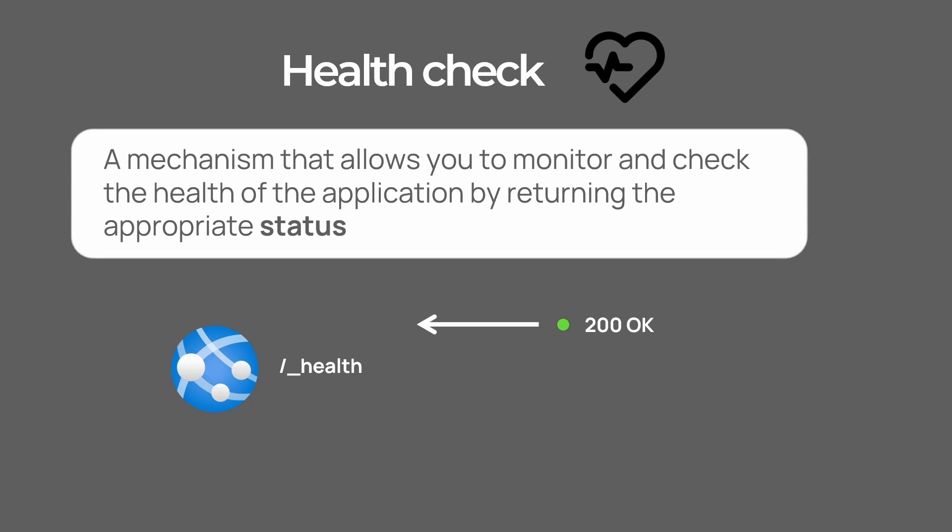A 200 OK response would mean that our application has correctly verified all of its dependencies — for example, it is able to connect to the database and to some external services, and it is basically up and running correctly. You can perform these kinds of checks at time intervals, for example, every 5, 10, or 15 minutes. Whenever the application is unhealthy — meaning that something is down, such as the connection to the database — the health check endpoint would return a 503 error status code.